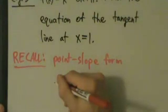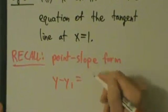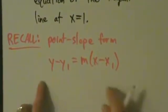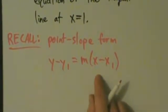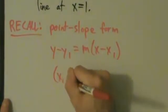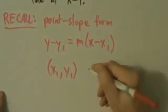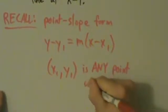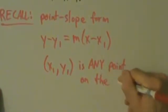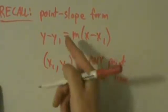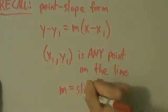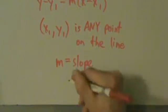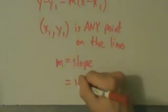Point-slope form is: y minus y1 equals m times the quantity x minus x1. Here, x and y are your typical variables. x1, y1 is any point on the line. And m is the slope.